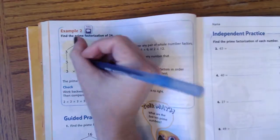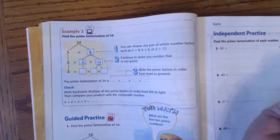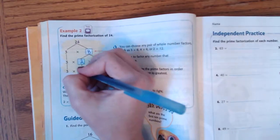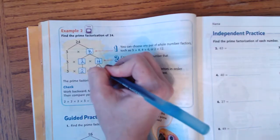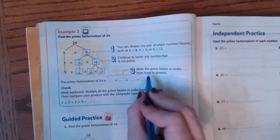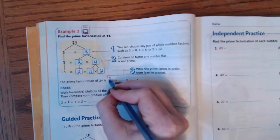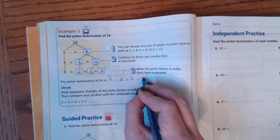8 can be broken down into 2 times 4. 2 is already prime, so we bring it down. 4 can be broken up into 2 times 2. So if we were to write this from least to greatest, we have 2 times 2 times 2 times 3.